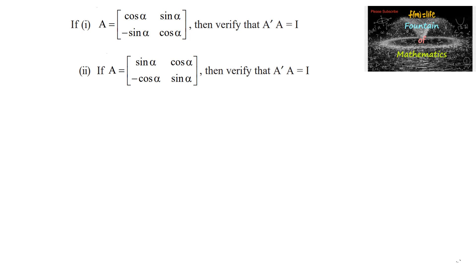Here, since the matrix A is given as 2 by 2, we shall consider an identity matrix of order 2 by 2, that is I is equal to 1, 0, 0, 1.